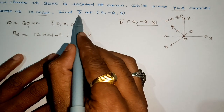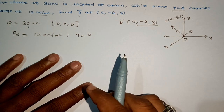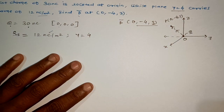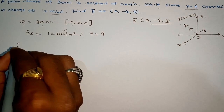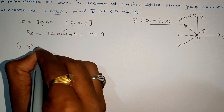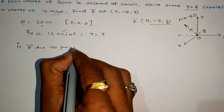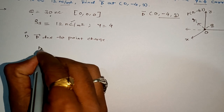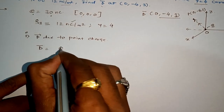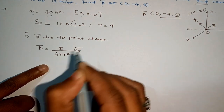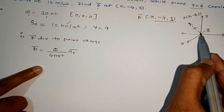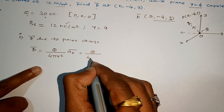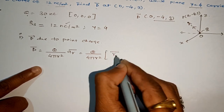The electric flux density has two contributions: one from the point charge and one from the surface charge distribution. First, we find D-bar due to the point charge. The formula is D-bar = q / (4π r²) · ar-bar, where ar-bar is the unit vector directed from O to P, which equals r-bar divided by r.